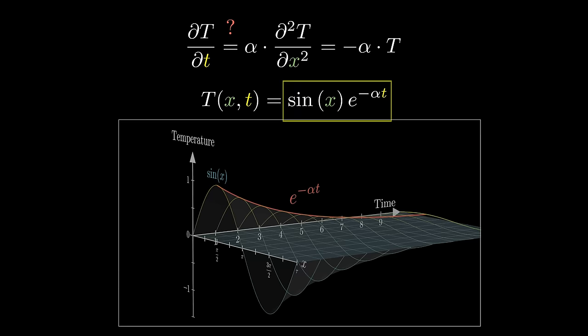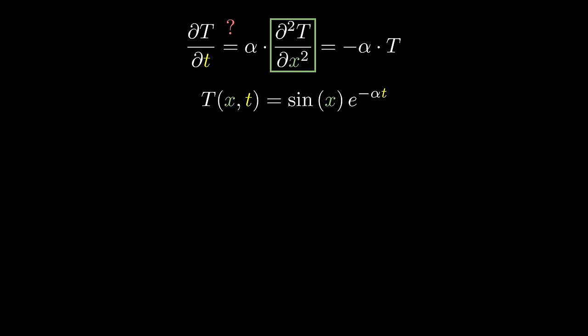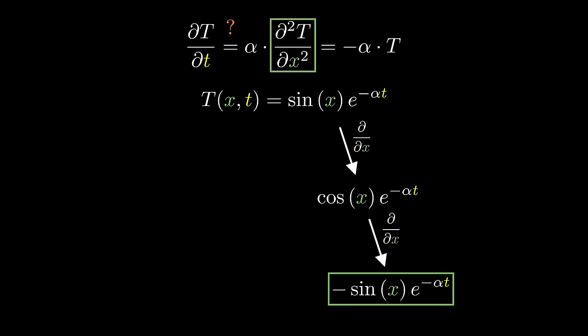Here, go ahead and check the partial derivatives. The proposed function of x and t is sine of x times e to the negative alpha t. Taking the second partial derivative with respect to x, that e to the negative alpha t term looks like a constant. It doesn't have any x in it. So it just comes along for the ride, as if it was any other constant, like 2. And the first derivative with respect to x is cosine of x times e to the negative alpha t. Likewise, the second partial derivative with respect to x becomes negative sine of x times e to the negative alpha t.